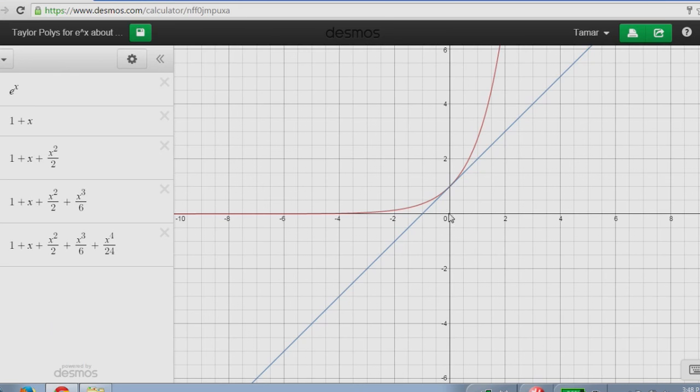And we see that near 0, it's actually a pretty good approximation, but the further we veer outside of that interval, we see that the linear approximation is not a good one for e to the x.